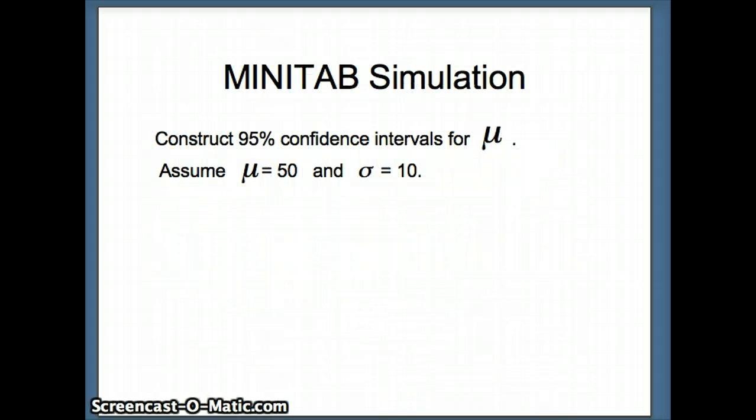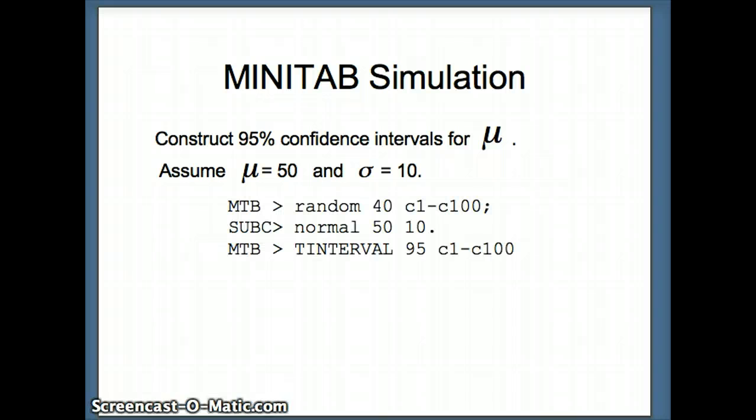So let's take a look at a MINITAB simulation. We want to construct 95% confidence intervals for μ. Here we are going to start with a situation where μ is going to equal 50 and σ is going to equal 10. So we know in this case what μ is, but practically that doesn't happen, but in the case of a simulation it can. Our syntax is: random 40, put 40 numbers from column 1 to column 100, and those numbers will come from a normal distribution with a mean of 50 and a standard deviation of 10.